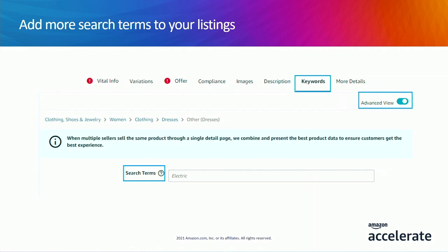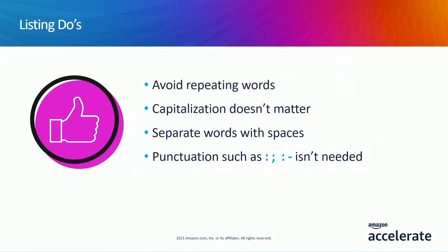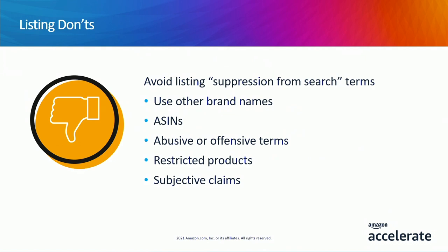Here are some helpful tips with search terms. Product titles, brand, and company name are already searchable, so you don't need to repeat them. Capitalization is not required, and there's no need for punctuation — just spaces between words. Now, some don'ts with search terms, or the listing could get suppressed: avoid using other brand names due to IP protections; refrain from using ASINs, abusive or offensive terms, restricted products; and stay away from claims like pesticidal claims, such as antimicrobial. Any of these added to the search terms can lead to a listing suspension.